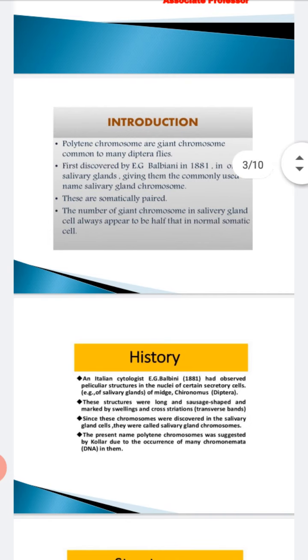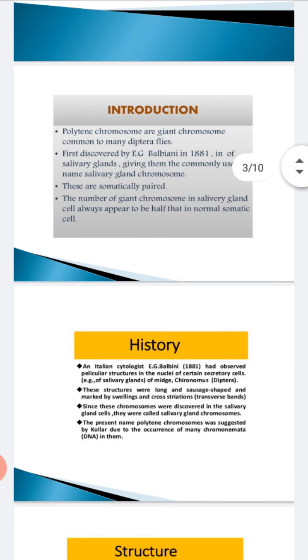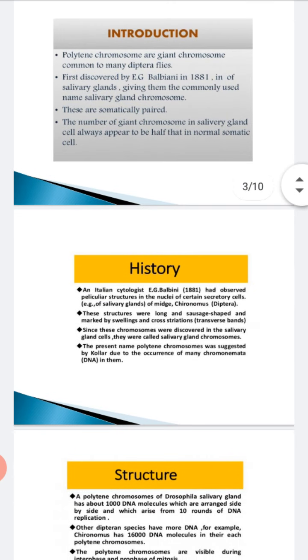Now they are also called as polytene chromosomes. This polytene chromosome name was suggested by scientist Kohler. A scientist named Kohler gave them this name due to occurrence of many chromonemata, meaning many DNA rounds in them. So they were given the name polytene chromosome.